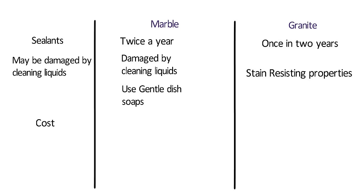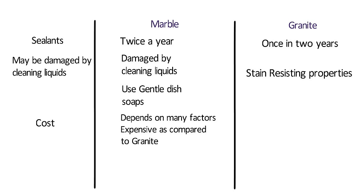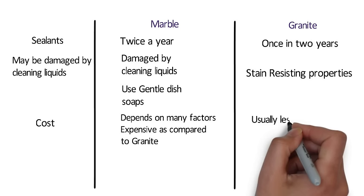Cost varies according to color and general appearance. The actual price depends on the quality of the stone, the complexity of the job, and the style of the tiles. As the varieties of marbles and granites are many, the cost of each stone basically depends on its availability in the market. Granite is usually less expensive than marble as it is a much more abundant material.